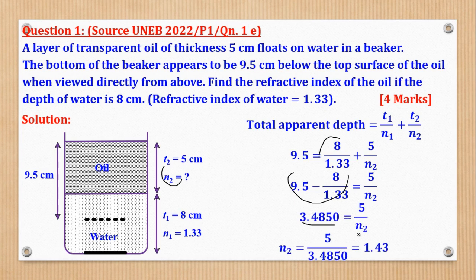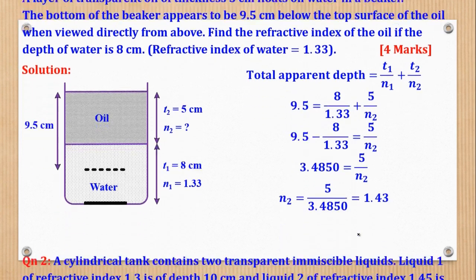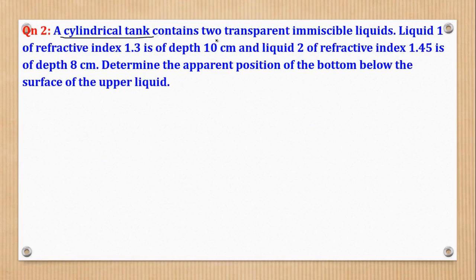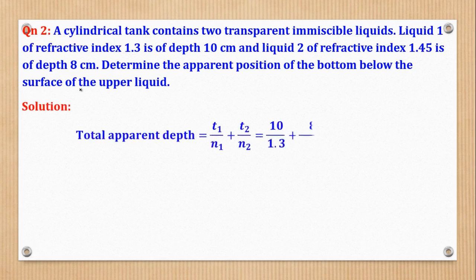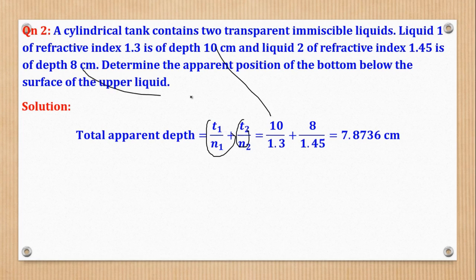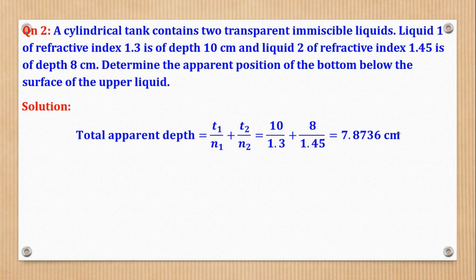Question 2: A cylindrical tank contains two transparent immiscible liquids. Liquid 1 of refractive index 1.3 is of depth 10 cm, and liquid 2 of refractive index 1.45 is of depth 8 cm. Determine the apparent position of the bottom below the surface of the upper liquid. Total apparent depth = T1/N1 + T2/N2 = 10/1.3 + 8/1.45, giving the required apparent depth.